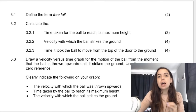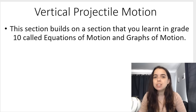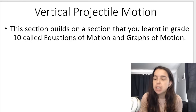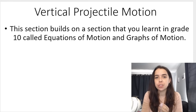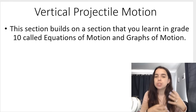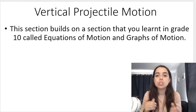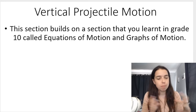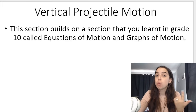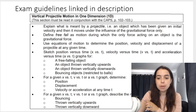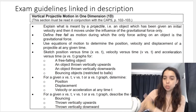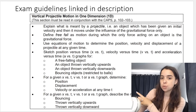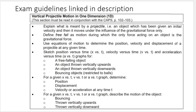Before we get into this, I want you to know that vertical projectile motion isn't really a completely new section. It actually builds on a section you learned in Grade 10 and were tested on again in Grade 11 — equations of motion and graphs of motion. So before you tackle this section, going back to review your Grade 10 equations of motion will be helpful. This is a snippet from your exam guidelines for vertical projectile motion — I've linked it in the description box — and it tells you exactly what you need to know. Use it as a checklist as you go along.